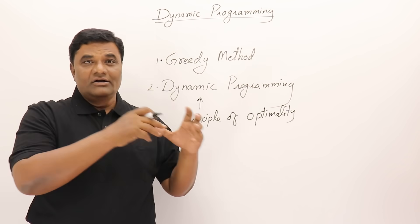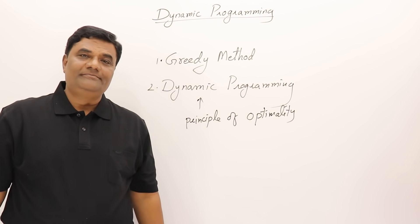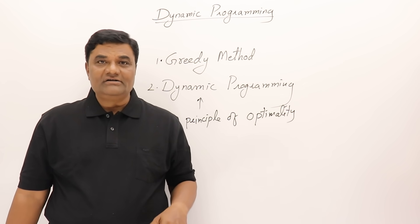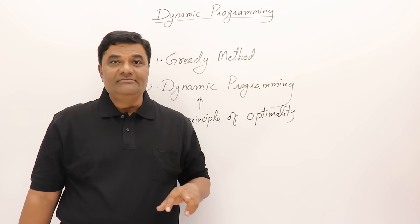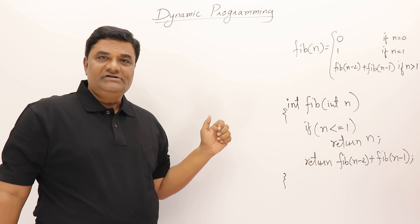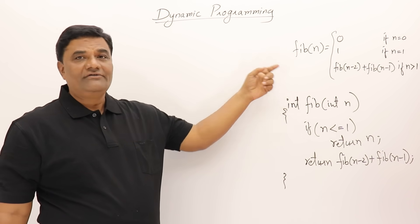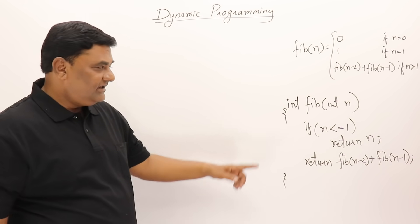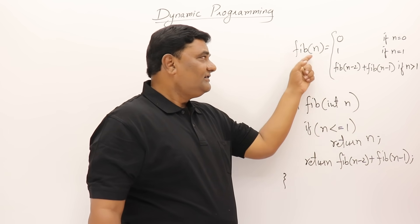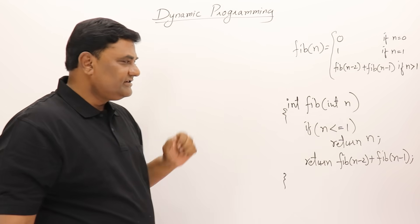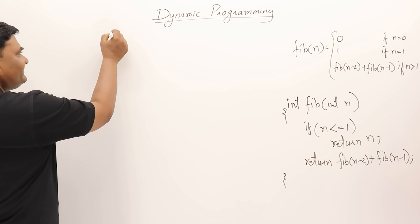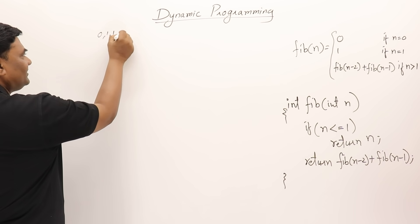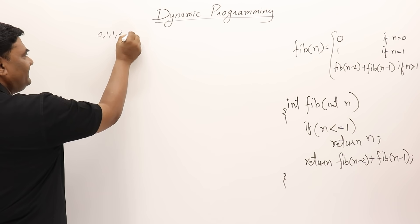Let us see how dynamic programming adopts the tabulation method or memoization and the difference between them. I have an example — this is the recursive definition of a Fibonacci term and a recursive function for finding the nth Fibonacci term. The Fibonacci series starts from 0 and 1, and every term is obtained by adding the previous two terms.